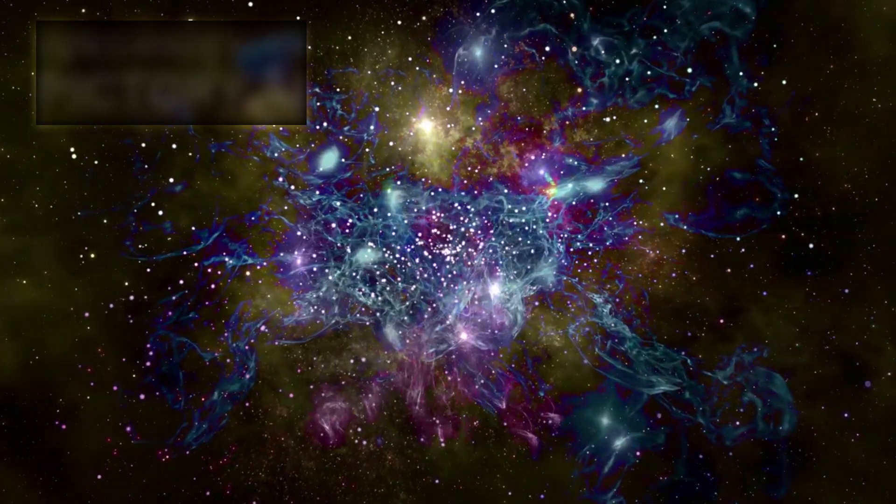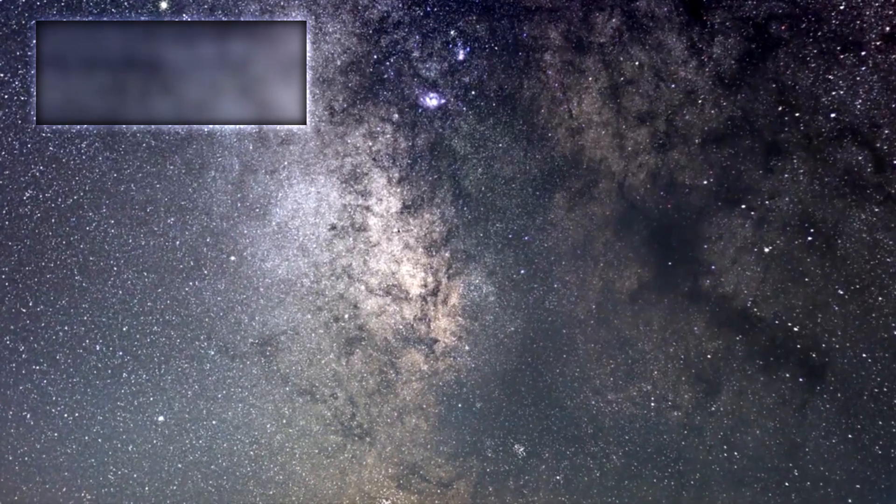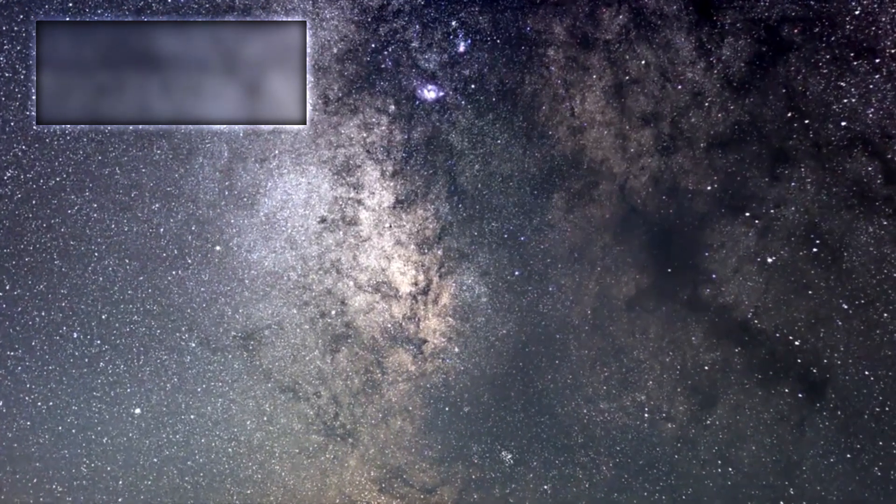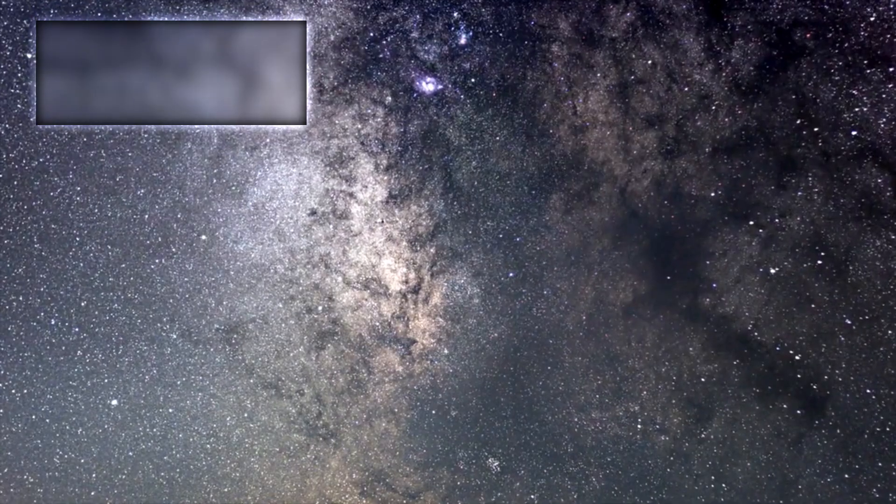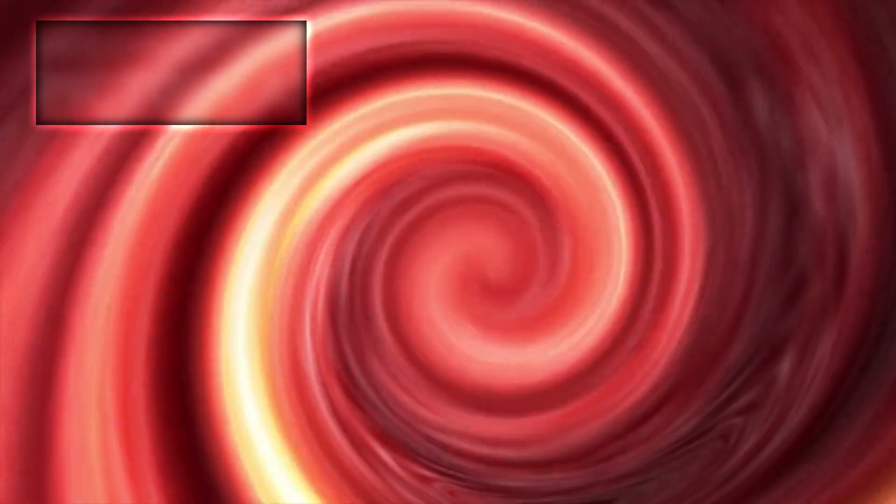Our own Milky Way is no exception. At its center lies Sagittarius A asterisk, a supermassive black hole quietly anchoring the galactic core. Though relatively dormant, its immense gravity orchestrates the movement of stars and interstellar matter around it. Occasionally, it flares up as it swallows small amounts of gas and dust, reminding us of the powerful engine that slumbers at the heart of our galaxy.